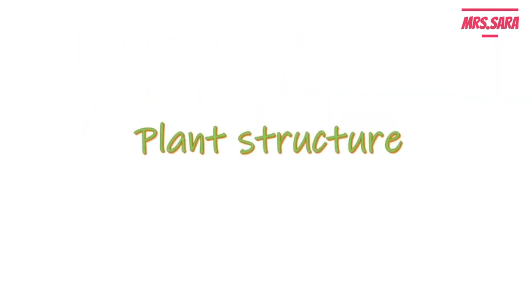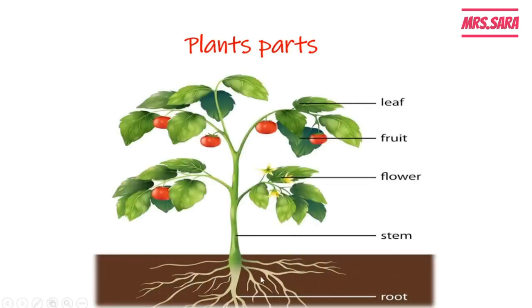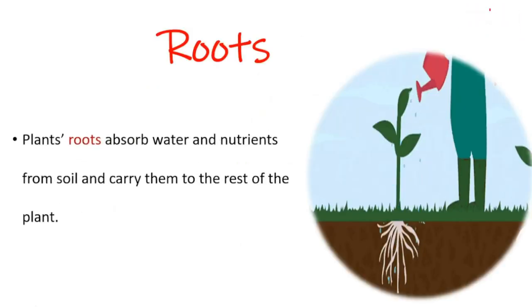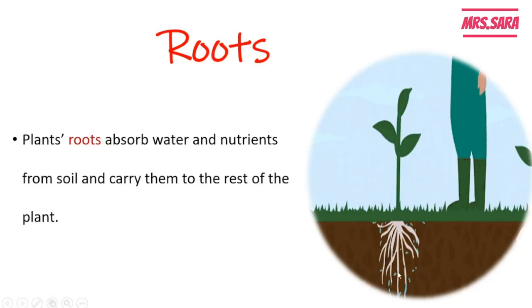Now we're going to talk about plant structure. Let's remember the parts of plants: roots, stem, leaves, flower, and fruits. The first part is the roots. The roots absorb water and nutrients from the soil and carry the water and nutrients to the rest of the plant.